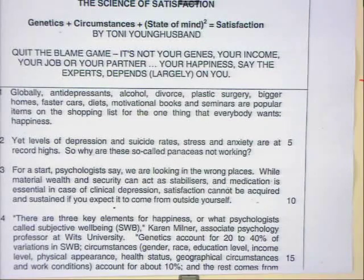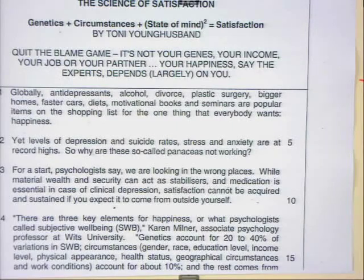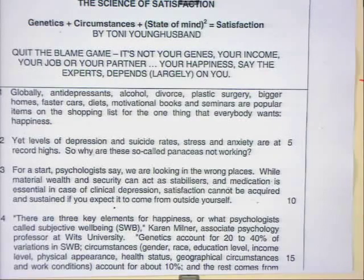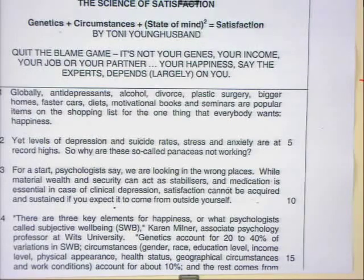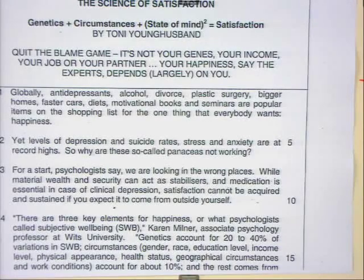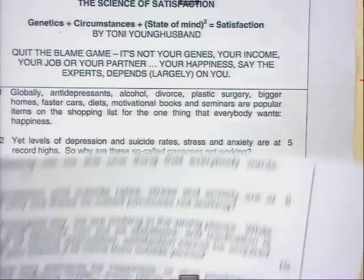While material wealth and security can act as stabilizers, and medication is essential in the case of clinical depression, satisfaction cannot be acquired and sustained if you expect it to come from outside yourself. There are three key elements for happiness, or what psychologists call subjective well-being. According to Karen Milner, Associate Psychology Professor at Wits University: genetics account for 20 to 40% of variations in SWB. Many circumstances — that's gender, race, education level, income level, physical appearance, health status, geographical circumstances, and work conditions — account for about 10%. And the rest comes from...